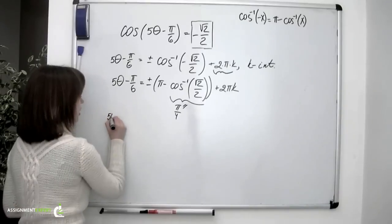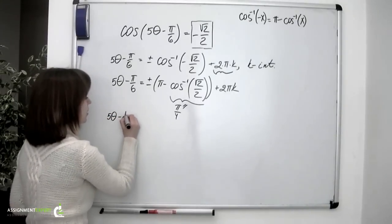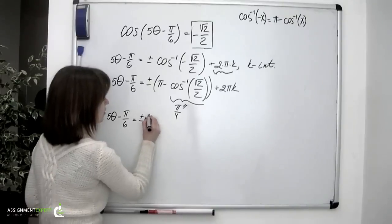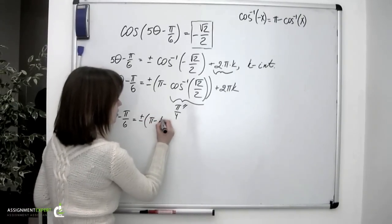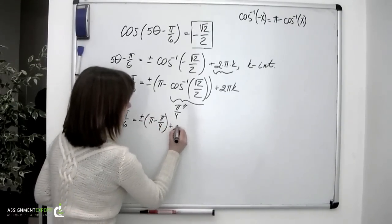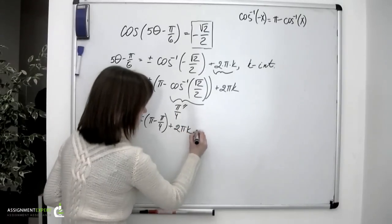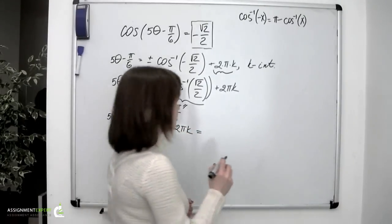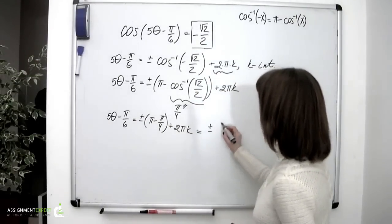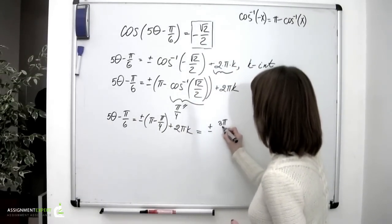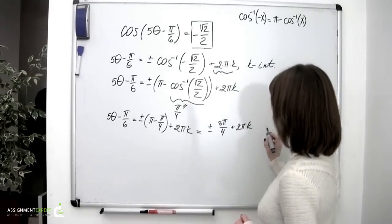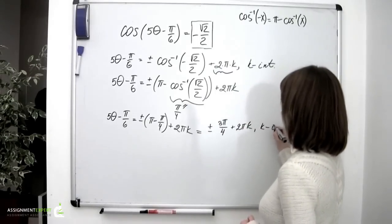So we have 5 theta minus pi over 6 equals positive or negative quantity pi minus pi over 4, plus 2 pi k, which equals positive or negative 3 pi over 4, plus 2 pi k, where k is an integer.